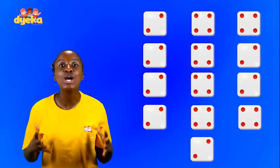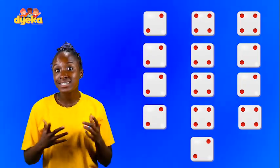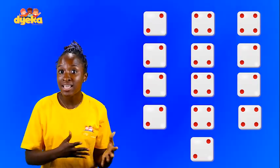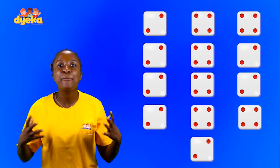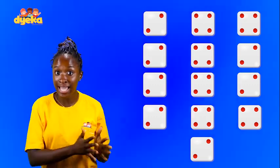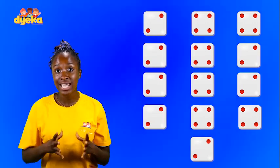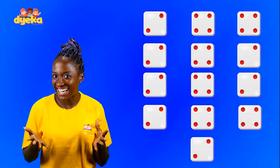Hello friends! Let's do some learning. We are going to organize all these dice. Some of them have 2 dots and others have 4 dots. I would like to put the dice with 2 dots together in one group and the dice with 4 dots into another group. Can we do that together?